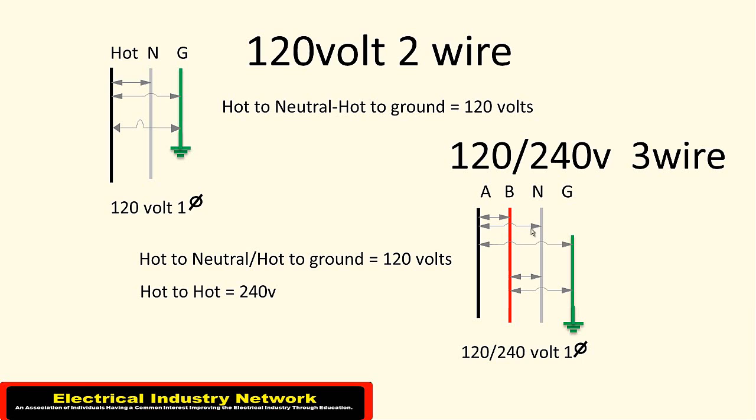A to neutral, 120, and B to neutral, 120. And then the same A and B to ground, being 120. So you'll get your 240 between your A and B phases, also commonly two phases of what you've got your incoming power.